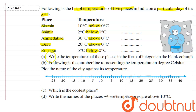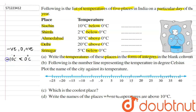First question: write the temperatures of these places in the form of integers in the blank column. Integers include negative numbers, positive numbers, and zero. The temperature in Siachen is 10 degrees Celsius below zero — it is less than zero, so it is negative. Since it is 10 below zero, in integer form Siachen is minus 10 degrees Celsius.